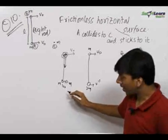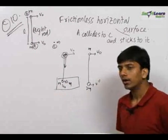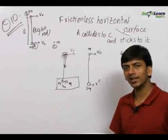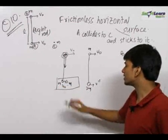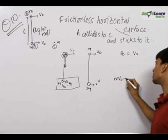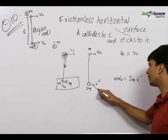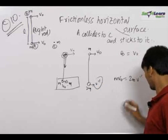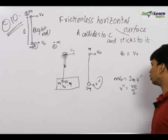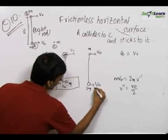By applying the same logic to the system of A and C, the net external force acting on A and C in the horizontal direction is zero, so the momentum of this system is conserved. Therefore we write mV0 = 2m·V double dash. When both of them stick together, they move with the same velocity V double dash, which comes out to be V0/2.